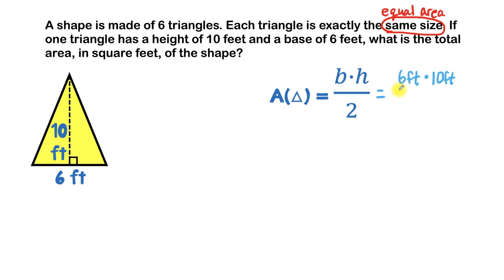All of that divided by two. So we've got six feet times 10 feet. Six times 10 equals 60, and feet times feet is what gives us feet squared.